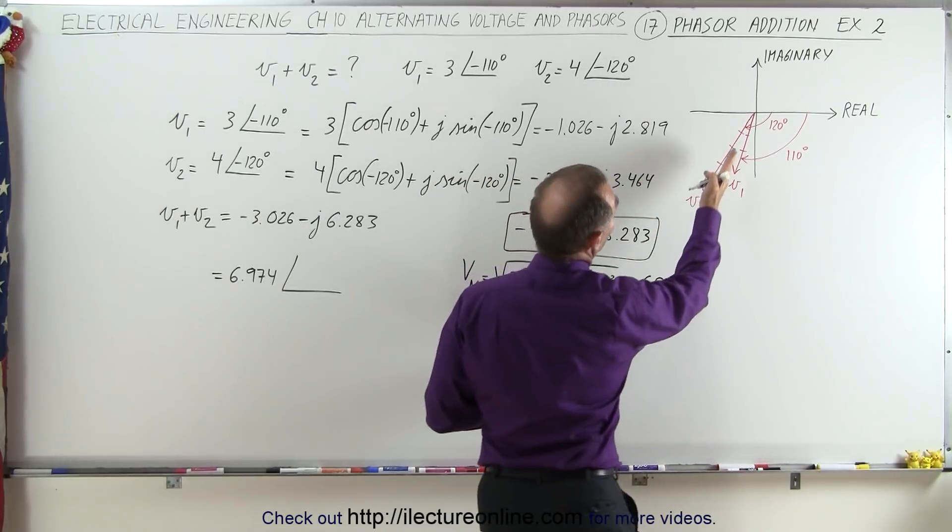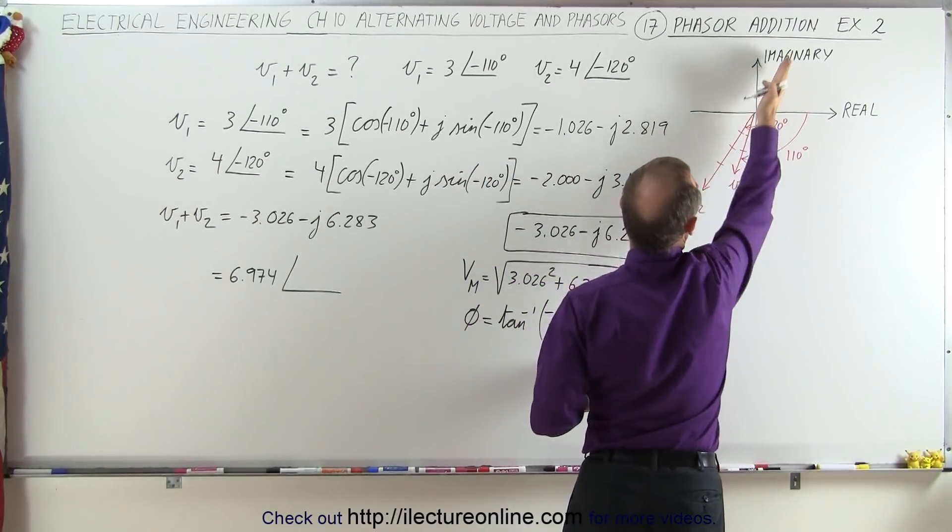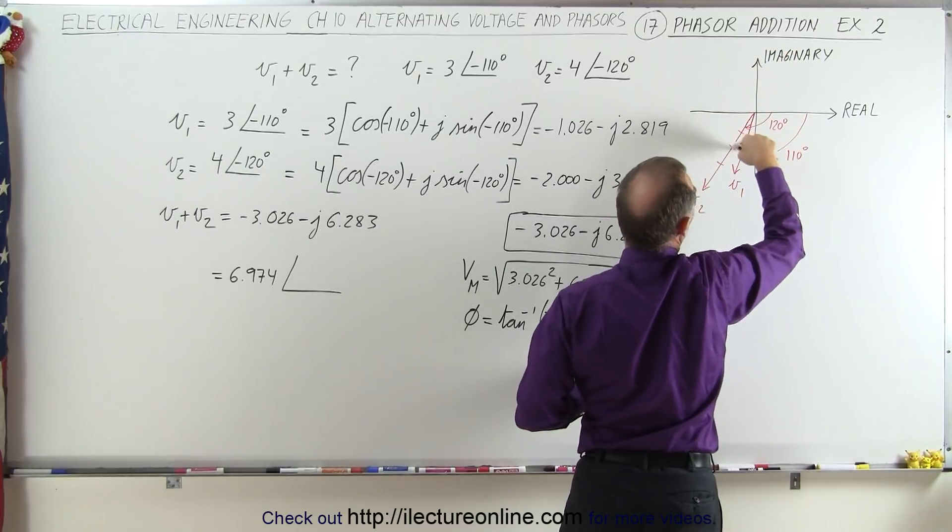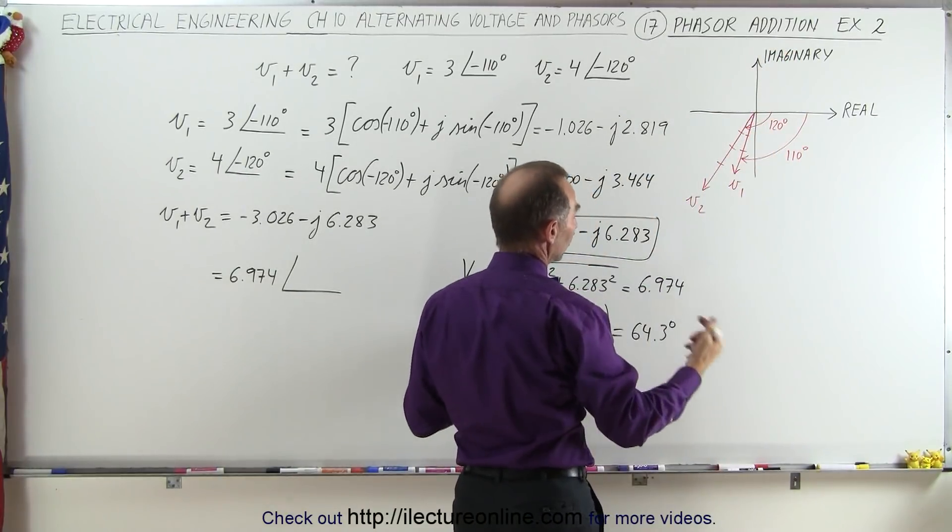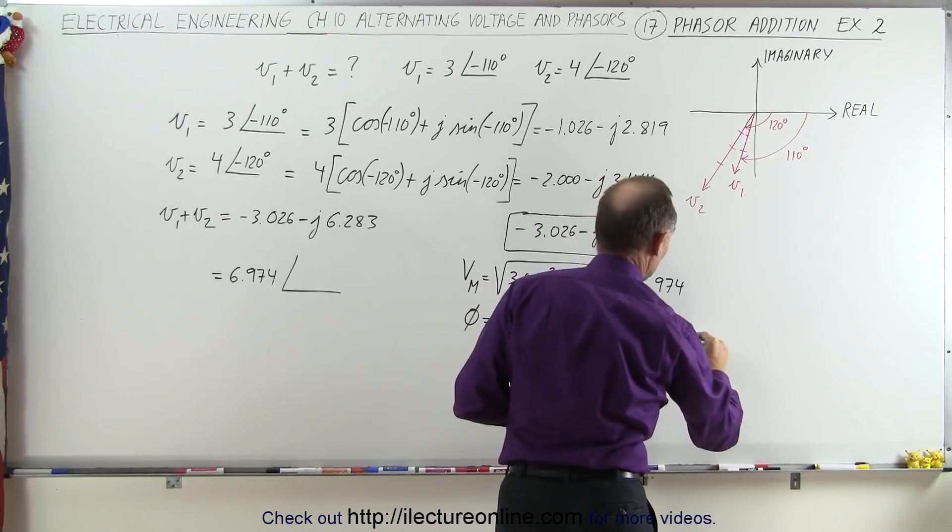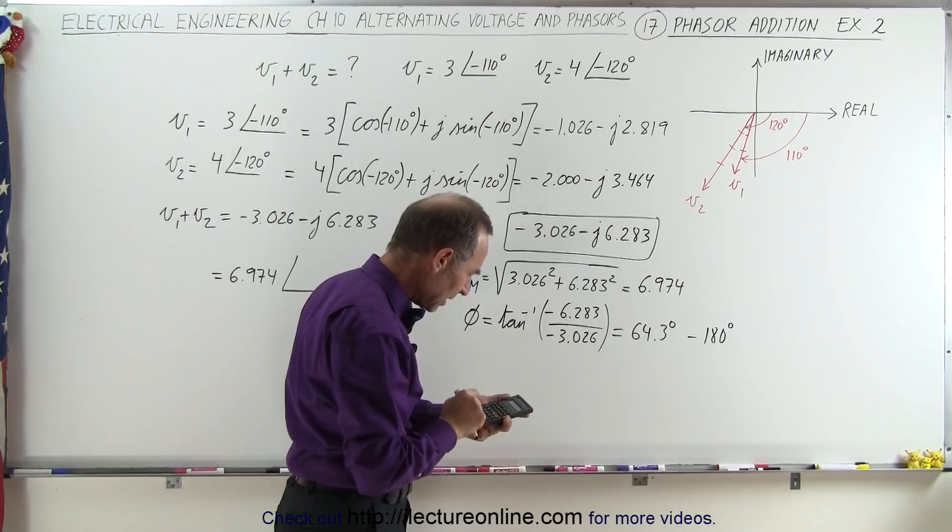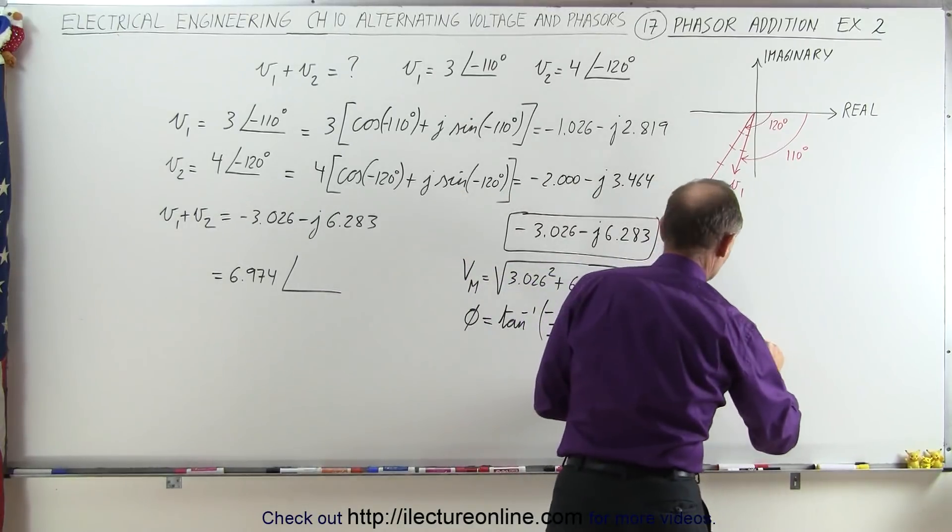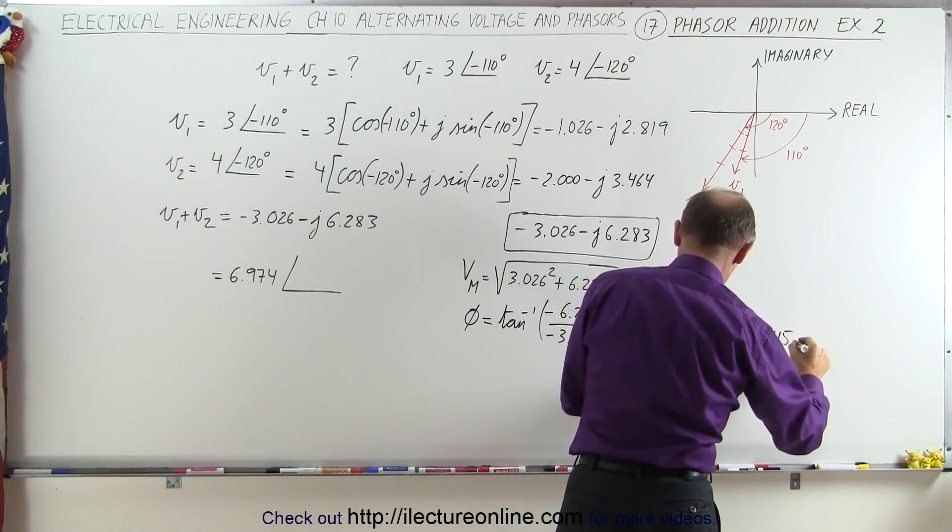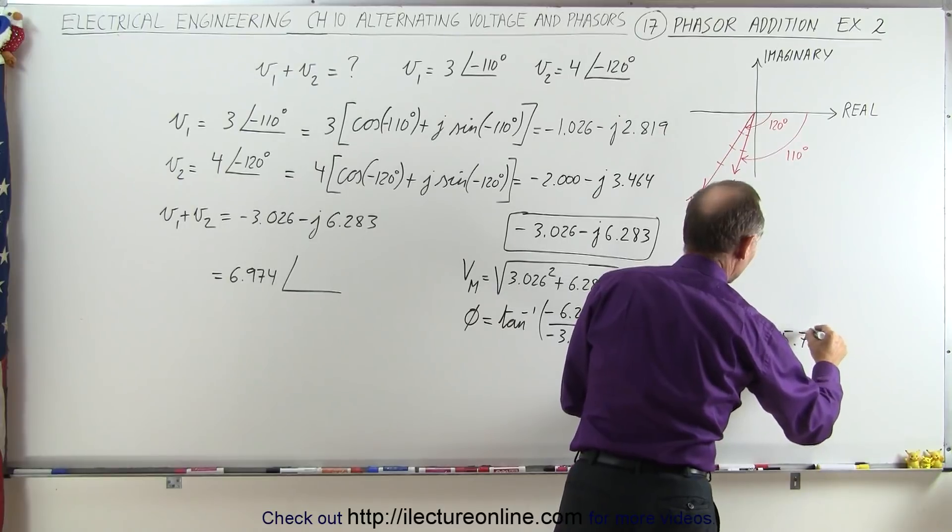But notice, 64.3 degrees would give us a vector in this direction, and we know that it's going to be somewhere between these two vectors. So what we're going to do is we're going to subtract 180 degrees. If we do that, minus 180, we get this is equal to minus 115.7 degrees. And now we get the correct angle, because we know it has to be somewhere between those two.